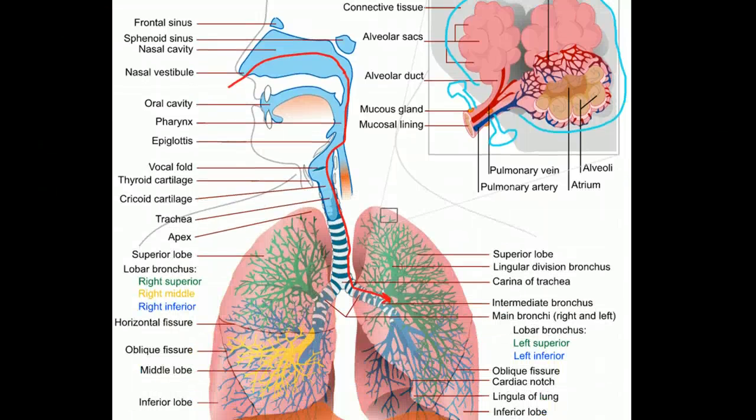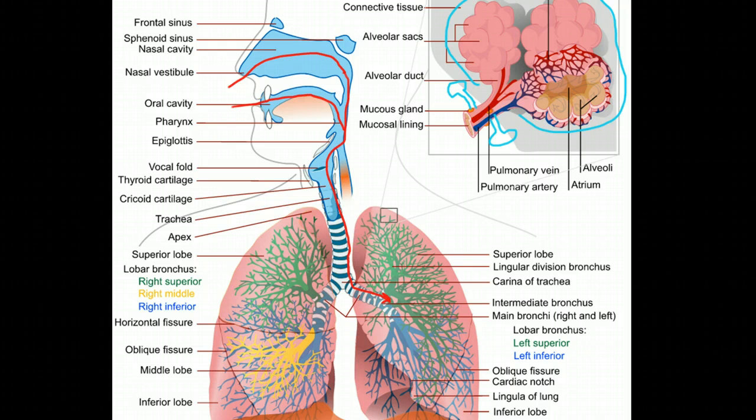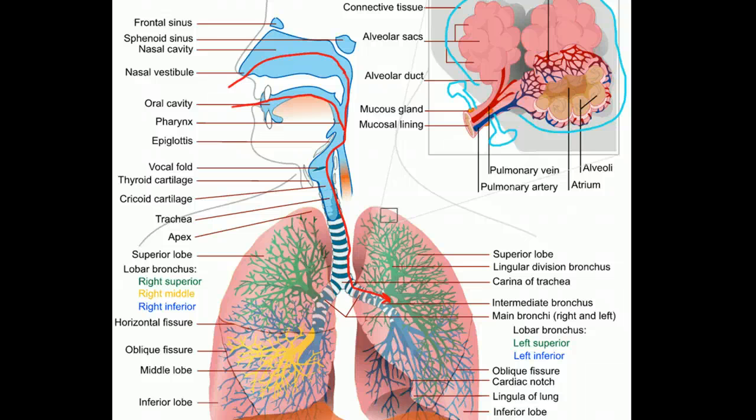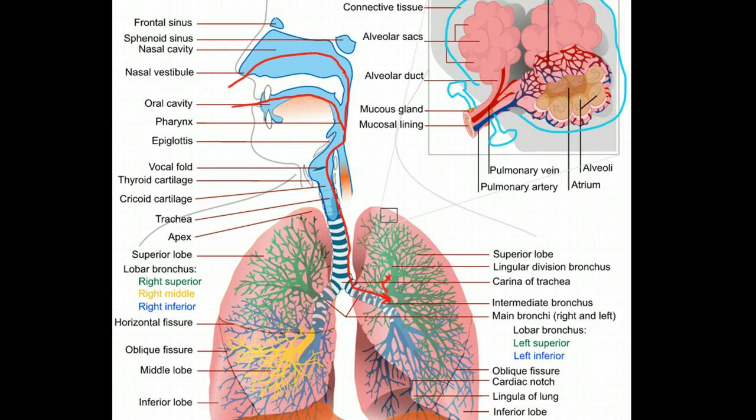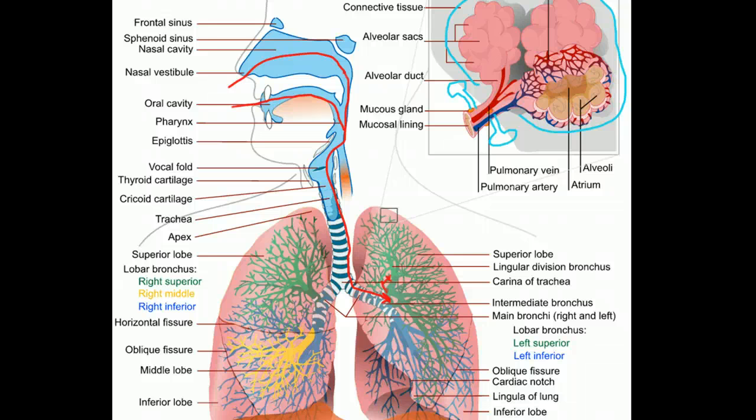As the air travels through the nasopharynx or the oropharynx, depending on whether you're mouth or nose breathing, and travels down through the trachea into the bronchi and works its way down through the 17 to 23 branches of the respiratory tree, a few things happen.